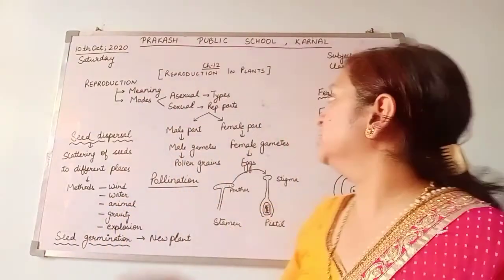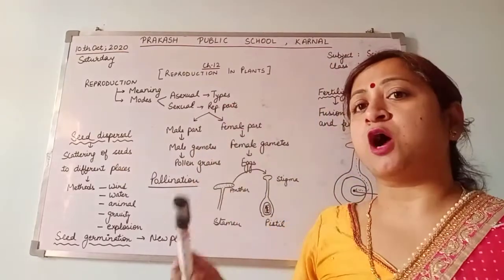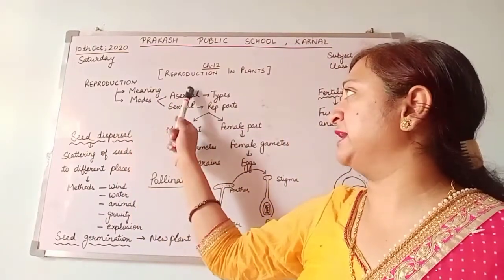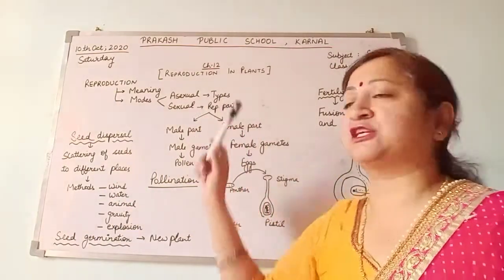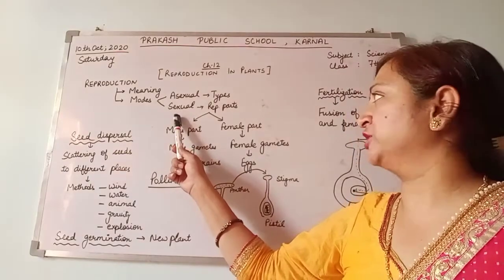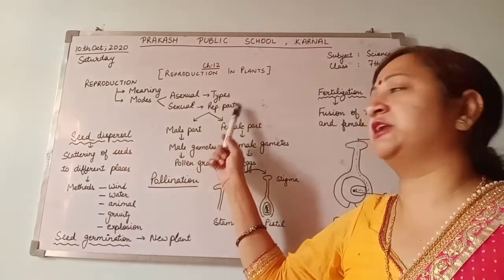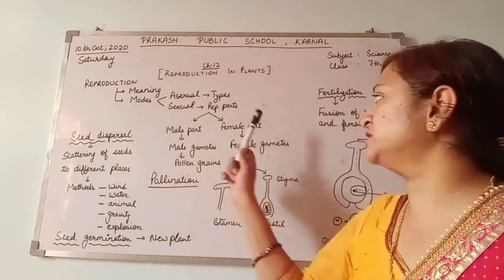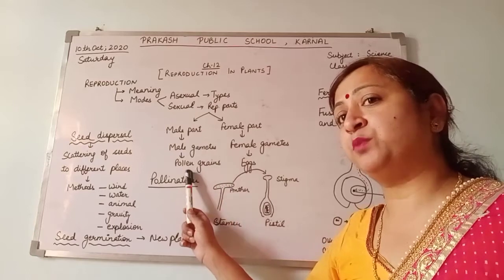Dear children, we have started chapter 12, Reproduction in Plants. Till now we have studied about reproduction - its different modes like asexual and sexual. Then we have studied the different types of asexual reproduction in plants. After that, we studied sexual reproduction in plants and the reproductive parts involved. Those reproductive parts are mainly the male part and female part. The male parts produce male gametes which are known as pollen grains.